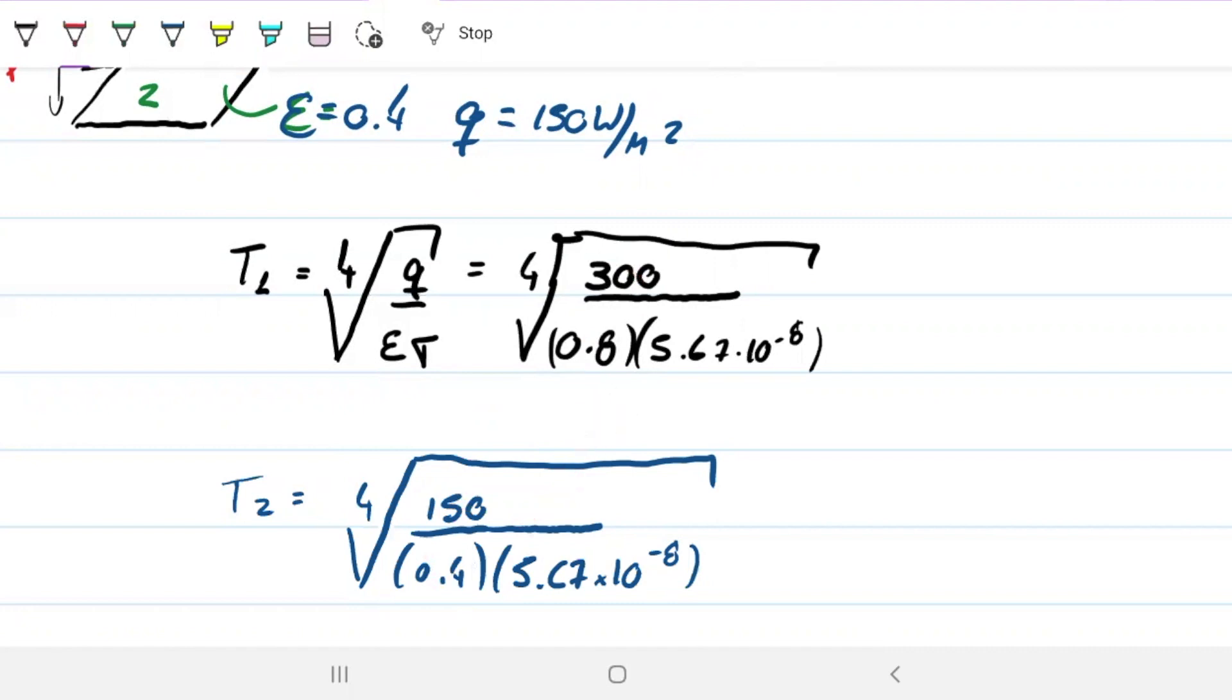So that means that the number that's going to come out of that is going to be the same, which means that the temperatures have to be the same. But let's say you didn't pick that up when you were first thinking about this, and you actually solve for it.